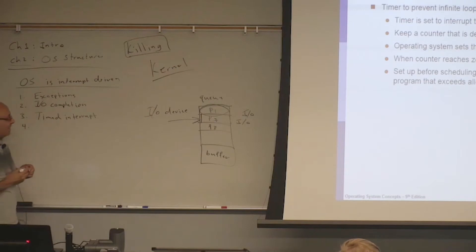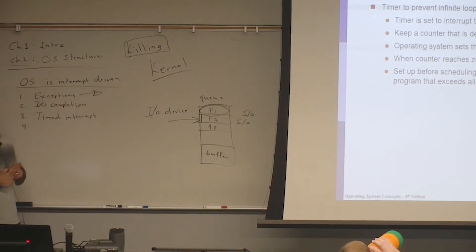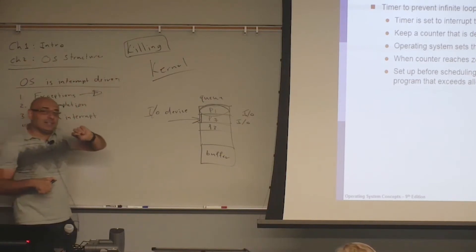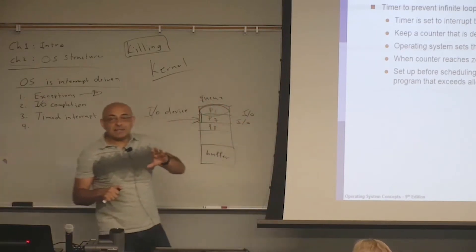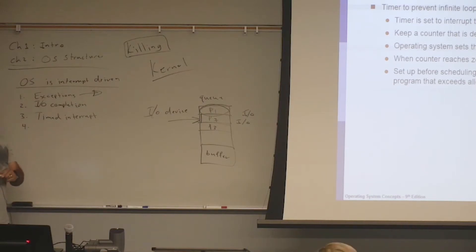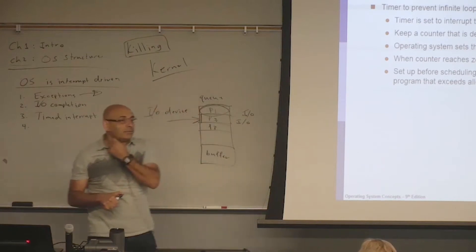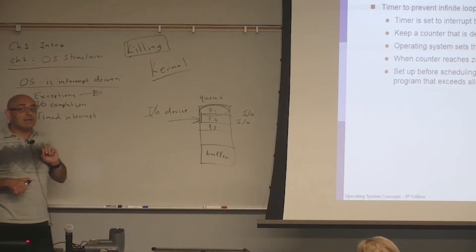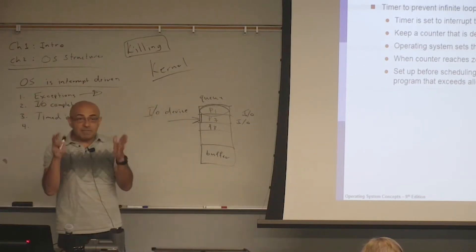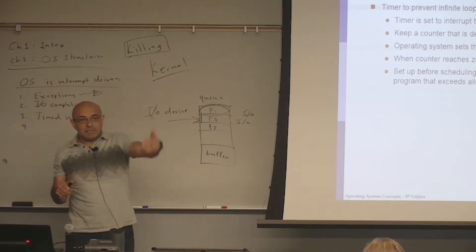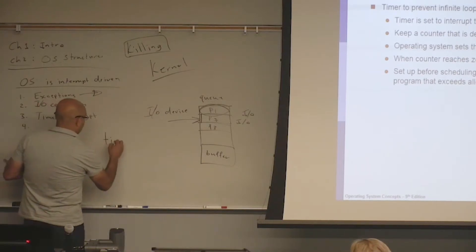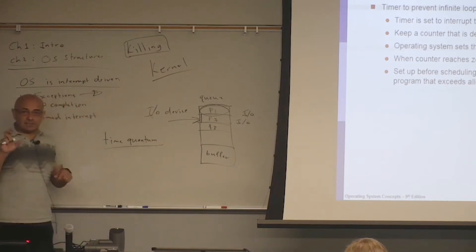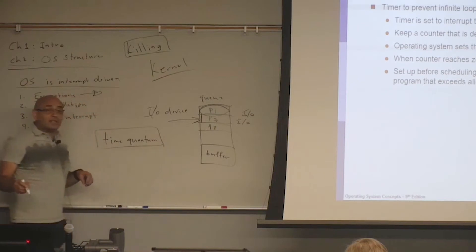Sometimes operating systems do kill processes — as we said, if an exception gets generated and the process is trying to do something wrong, then it's legal for the operating system to kill a process. But it's only legal if the process misbehaves. With the timed interrupt, the operating system does not kill a process; it only takes the CPU back. If a process is behaving well, it will keep getting time quanta. We call that period of time a time quantum — that's determined by the operating system.